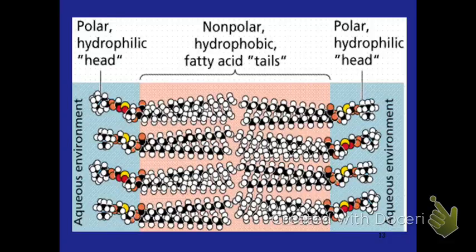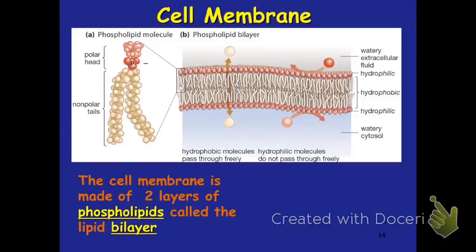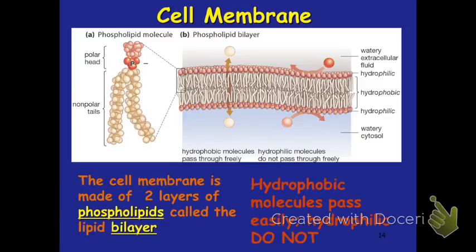Here's another close-up view showing the atoms that make up the phospholipid. You can see the hydrophilic heads facing outside toward the water and the nonpolar hydrophobic tails facing inside where there is no water. The cell membrane is made up of two layers of phospholipids called the lipid bilayer. Hydrophobic molecules can get through easily because the middle is hydrophobic, but hydrophilic molecules cannot — they're going to have to have a different way of being transported.